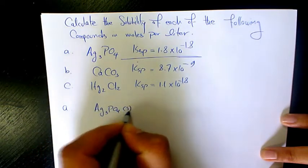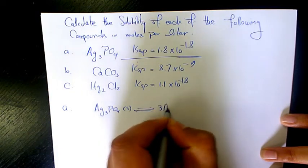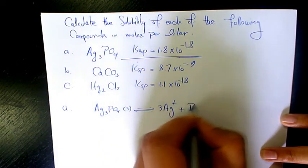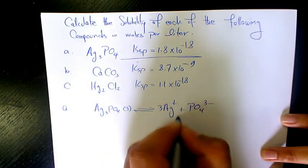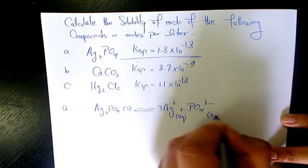Ag3PO4, when it dissolves, is going to be 3Ag plus, plus PO4 3 minus, aqueous phase.